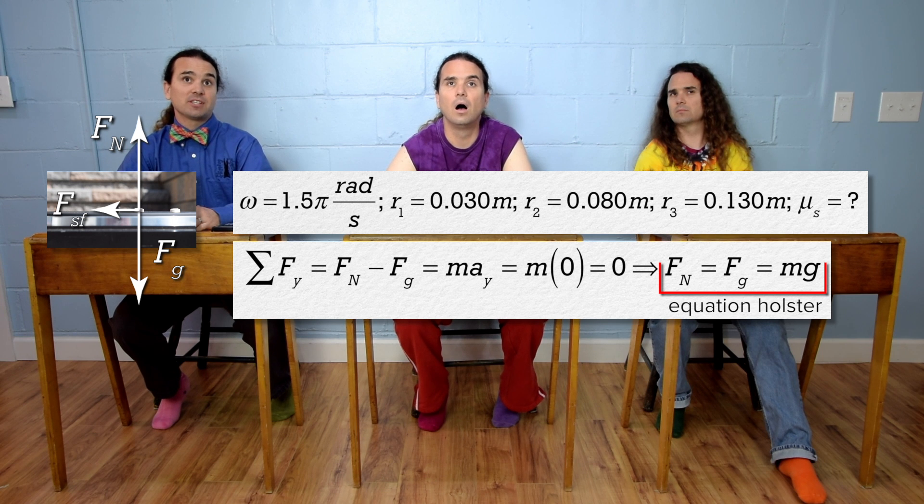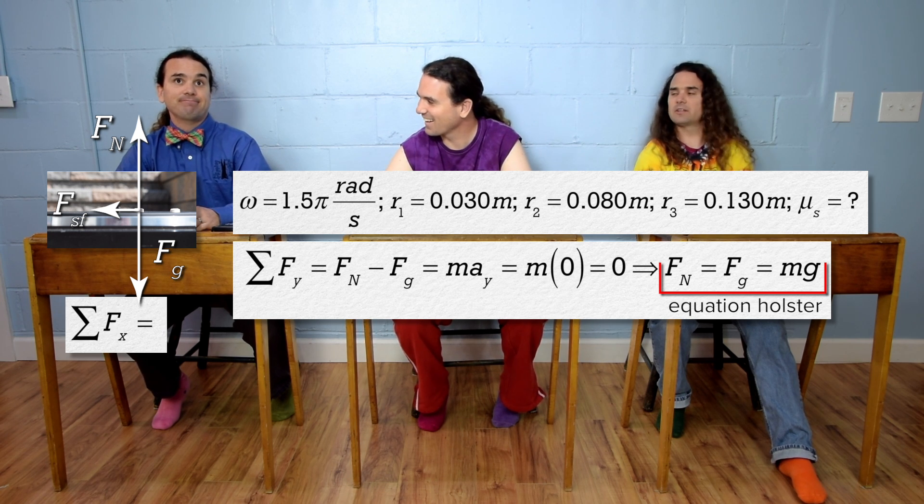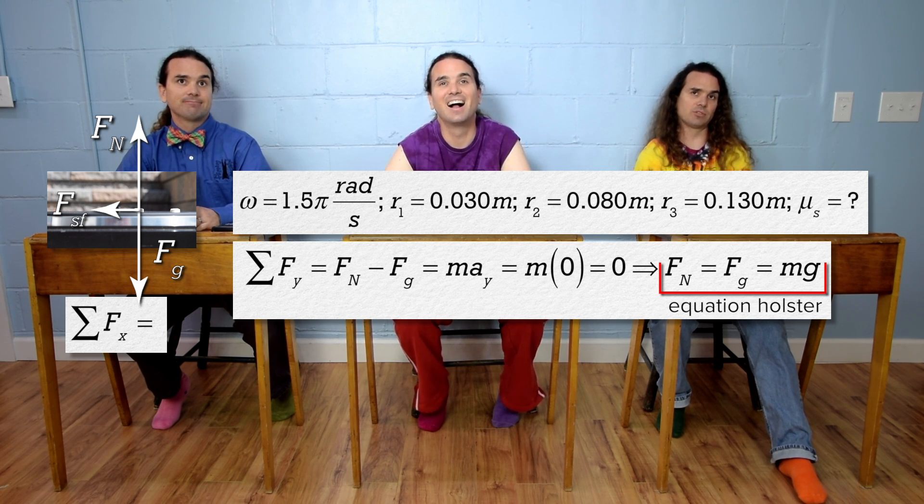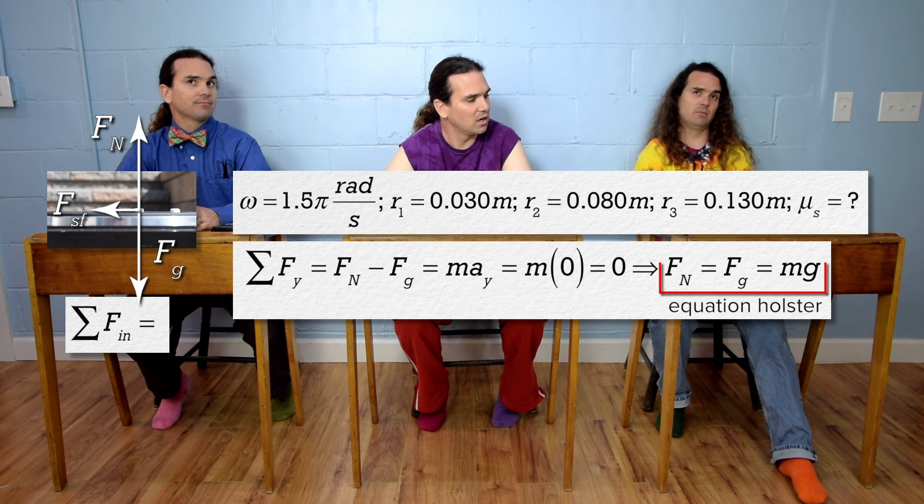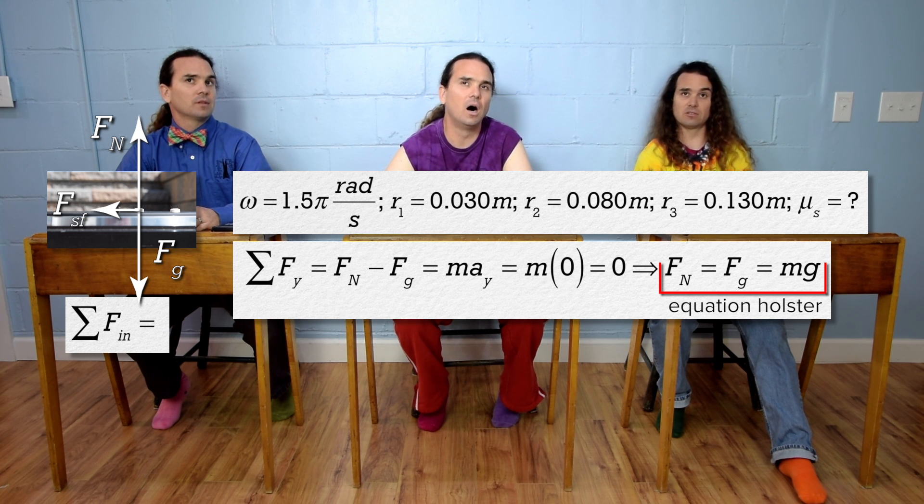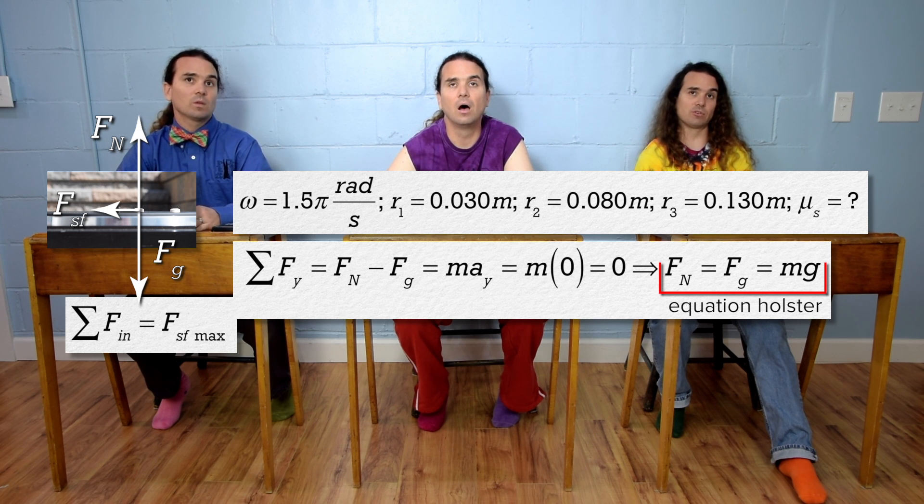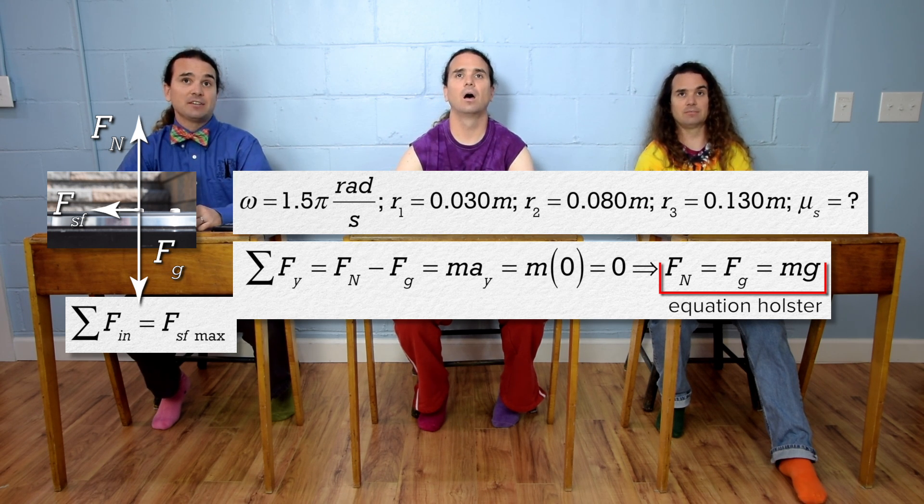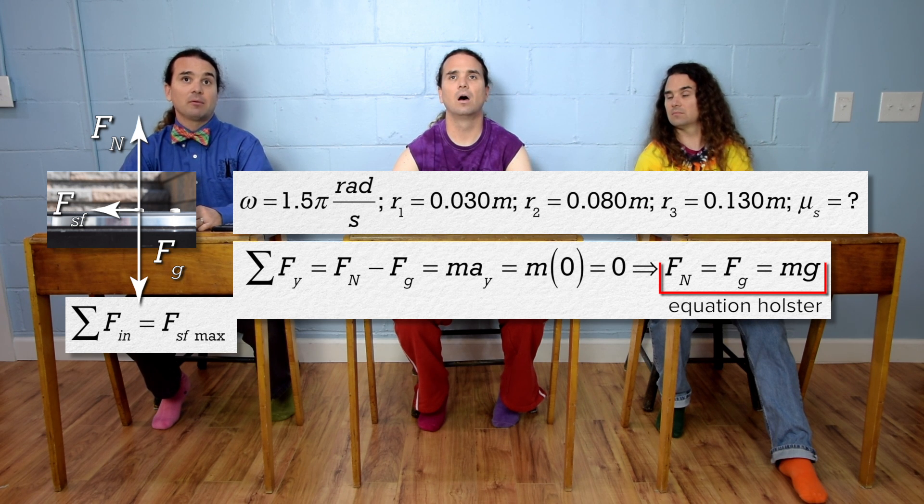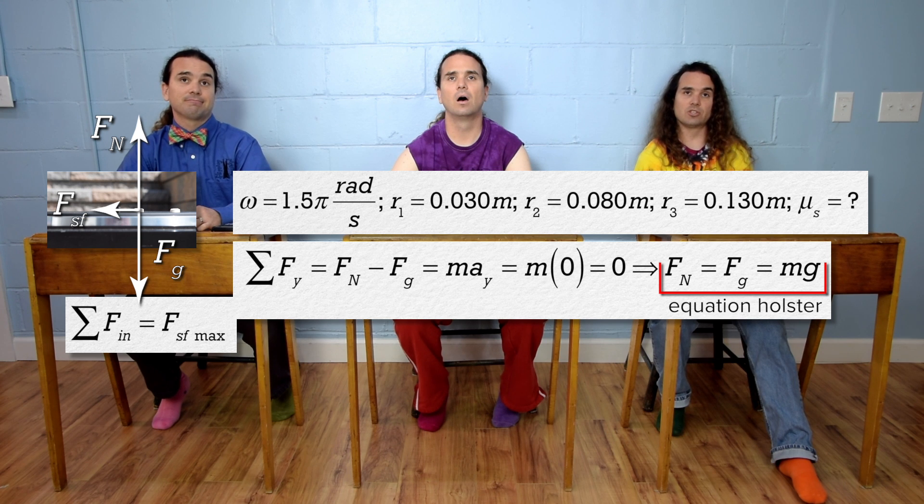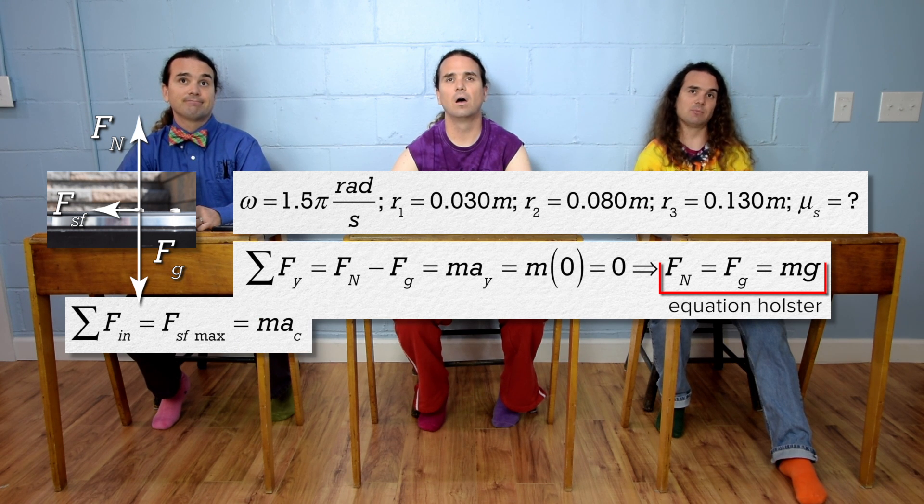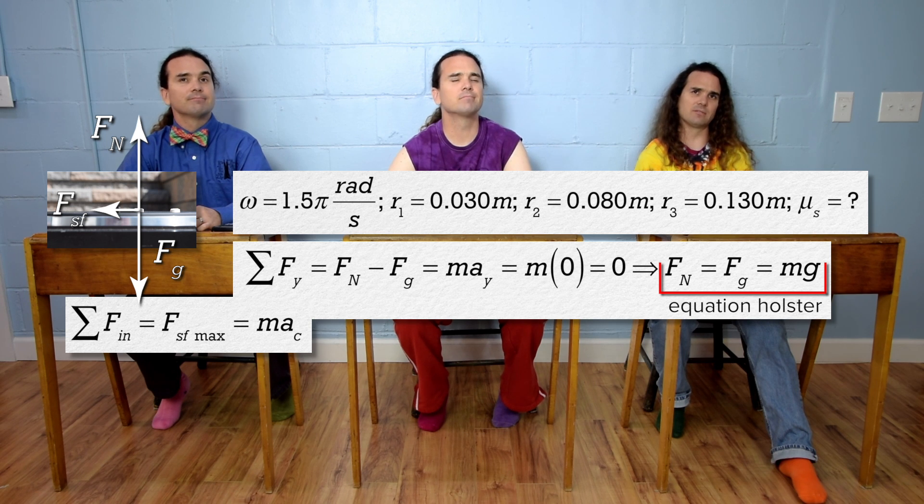And then sum the forces in the x-direction. Actually, we need to sum the forces in the in-direction, because the mints are moving in circles. So, the net force in the in-direction equals the force of static friction, which is positive in this particular example, because the force of static friction is always inward, which then equals mass times centripetal acceleration, but I don't know what to do now.